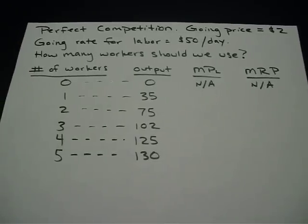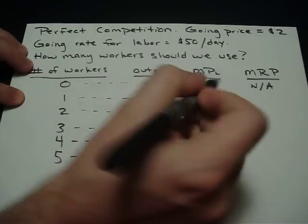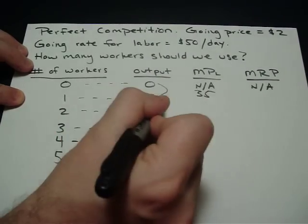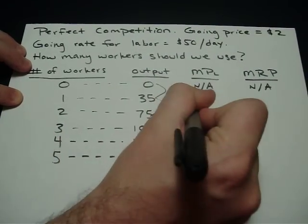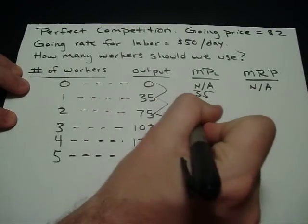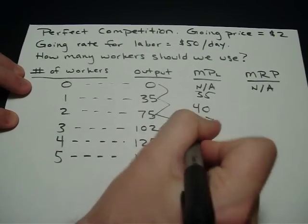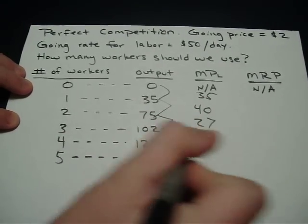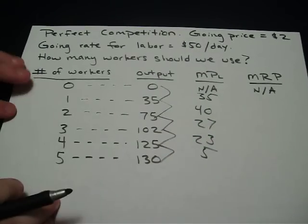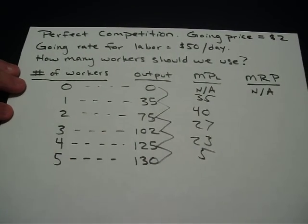MPL is what each additional worker produces. Going from no workers to one worker, they produce 35 more. From one to two workers, 40 more. From two to three workers, 27 more. Three to four workers, 23 more. Four to five workers produces just five more. So we're really seeing diminishing marginal returns from that second to fifth worker.